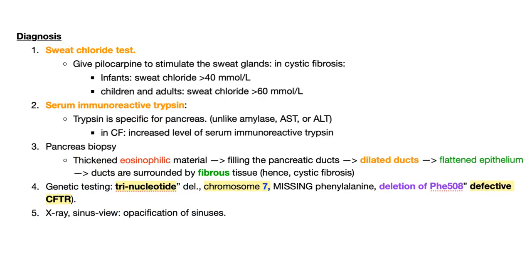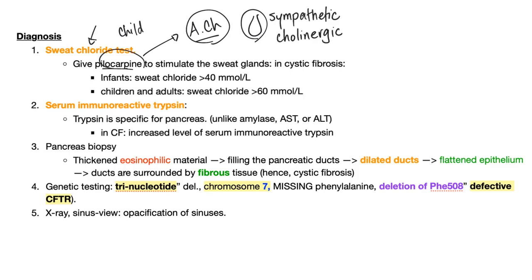How to diagnose cystic fibrosis? Number one: sweat chloride test, especially in children. You give pilocarpine, which is a parasympathomimetic that works on acetylcholine receptors. Since sweat glands respond to acetylcholine, we give pilocarpine to stimulate them. In cystic fibrosis, you'll find increased chloride in the sweat. In infants, sweat chloride of 40 is diagnostic. In children and adults, sweat chloride more than 60 is diagnostic.